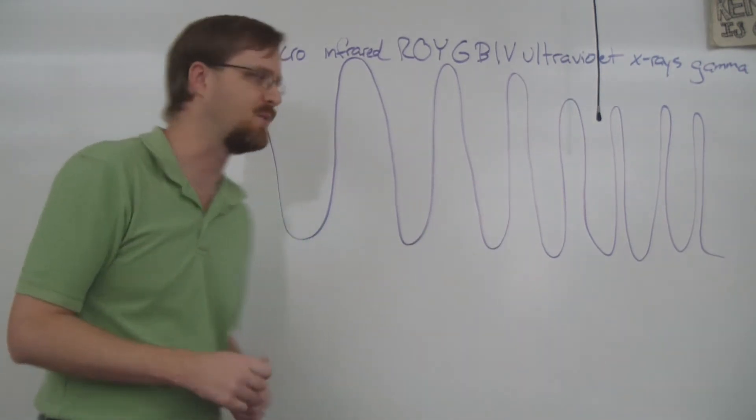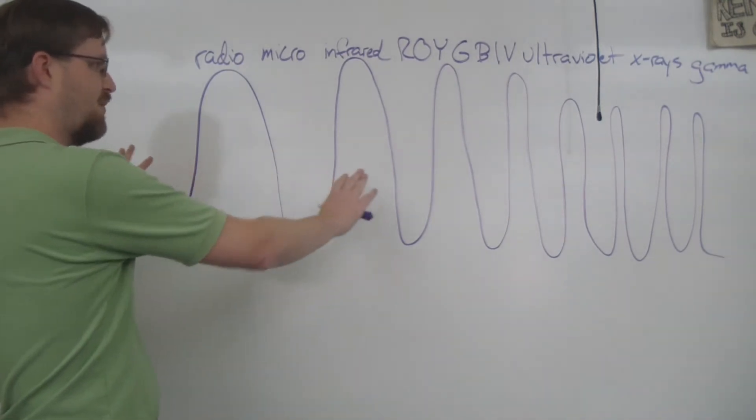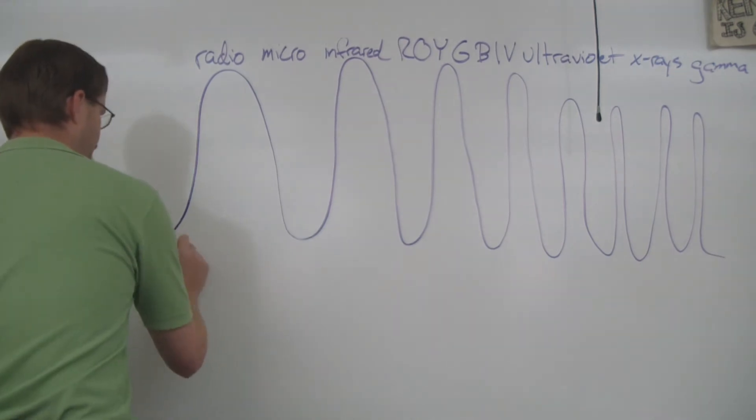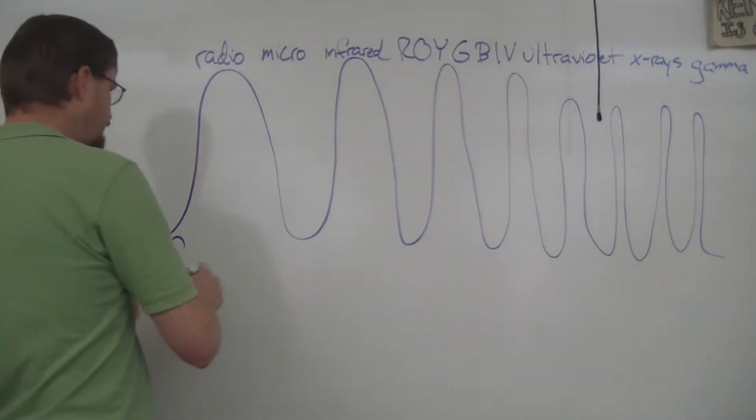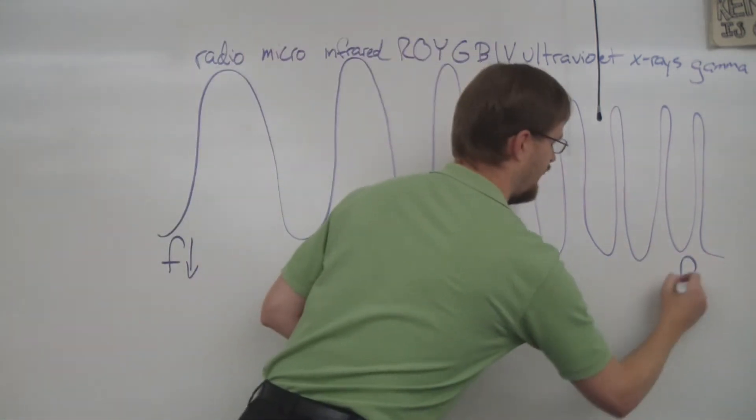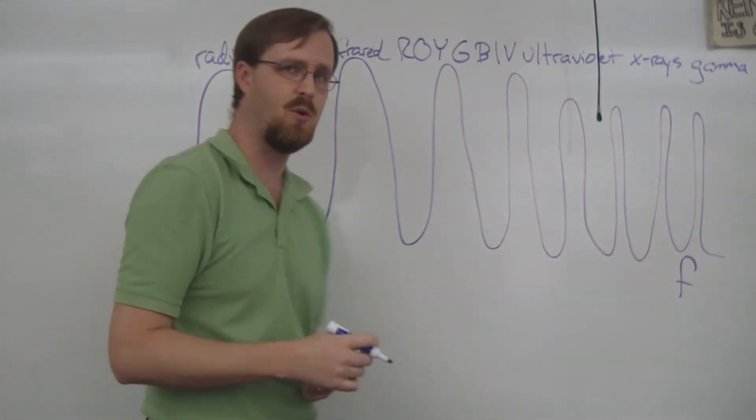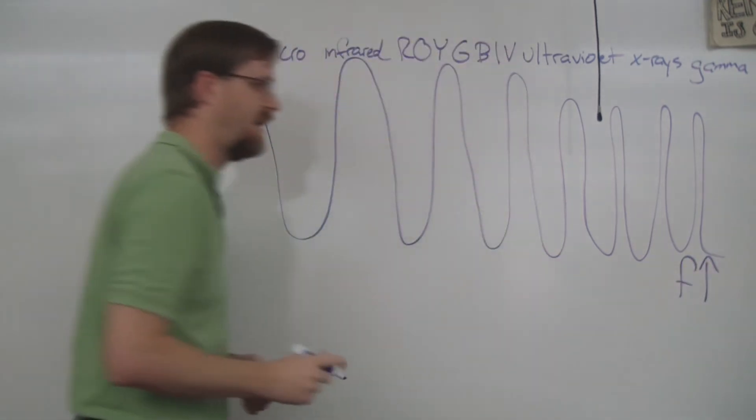Over here on the left, you can see that things are pretty spread out, and they're not really passing by all that quickly. So our frequency, abbreviated by a lowercase f, is pretty low right here. Over on the right hand side, you can see how they're really close together, and they're actually moving much more quickly. So therefore, our frequency here is pretty high.